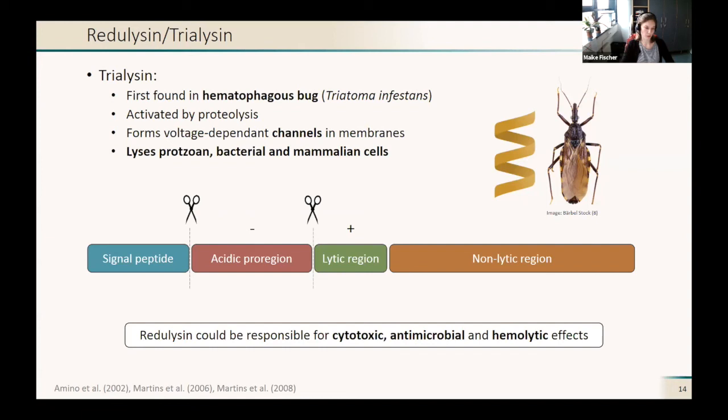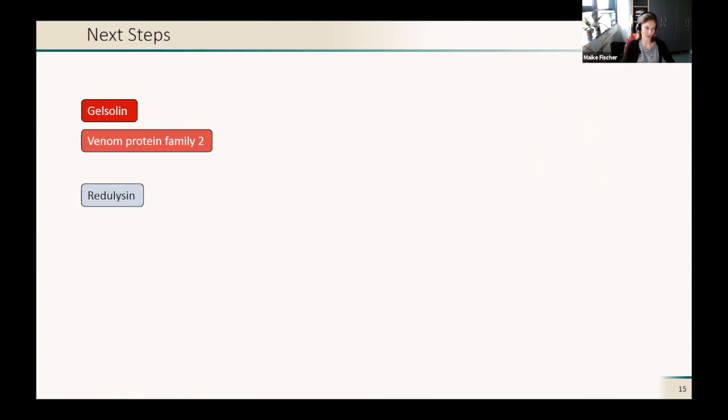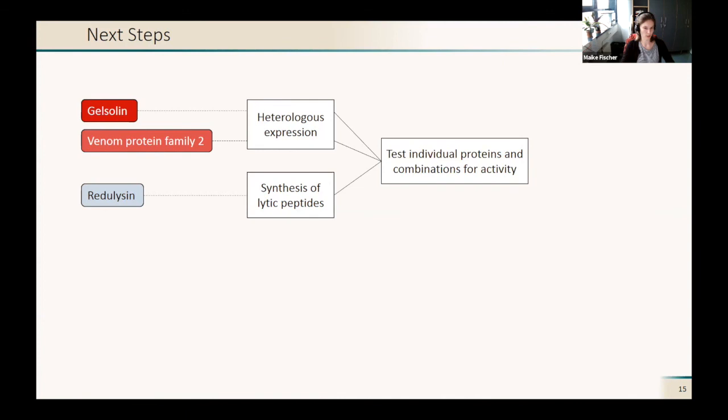We suggest that redilysin could be responsible for cytotoxic, antimicrobial, and hemolytic effects, but we could not confirm this yet. So the next steps are we have these three main candidate proteins or protein classes, and we want to heterologously express the gelsolin and venom protein family 2 proteins and synthesize the lytic peptides of our redilysins. Then we want to test individual proteins and combinations of proteins for activity and resolve with that the function and the mode of action of our proteins.